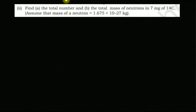Hello everyone, welcome back to Mike M Corner. In today's video we're going to do question 2.2, second part. The question says: find (a) the total number and (b) total mass of neutrons in 7 milligrams of Carbon-14. Assume that the mass of a neutron is 1.675 × 10⁻²⁷ kilograms.